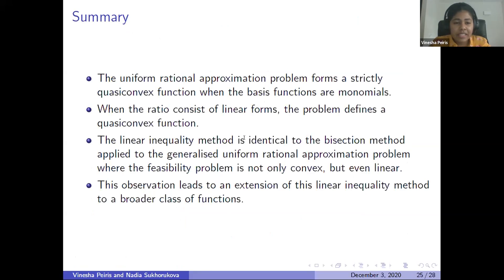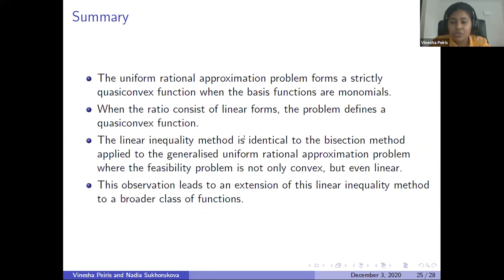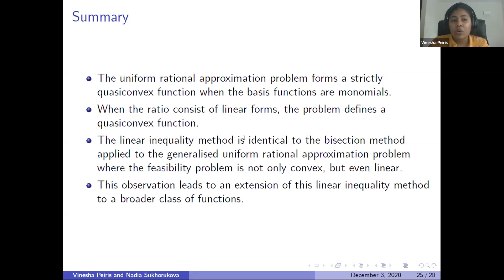To summarize: when we have a ratio of two polynomials, the objective function forms a strictly quasi-convex function. For a ratio of two linear functions, the problem is quasi-convex. The linear inequality method is identical to the bisection method applied to the generalized uniform rational approximation problem, and the feasibility problem reduces to linear programming. This leads us to extend the linear inequality method to a broader class — approximations in the form of a general quasi-linear function.